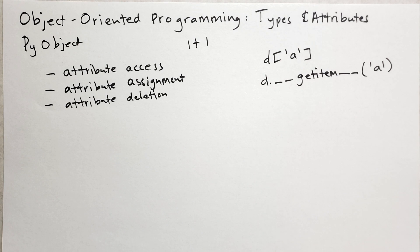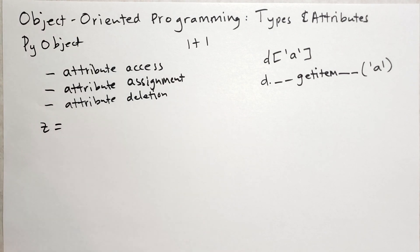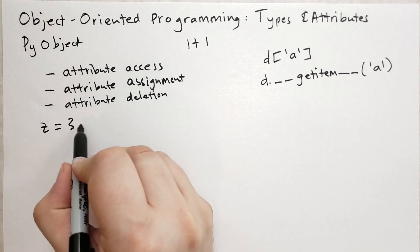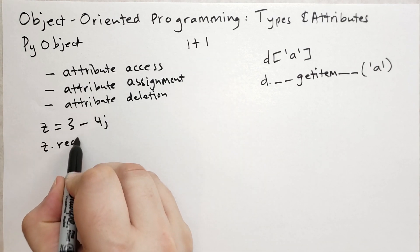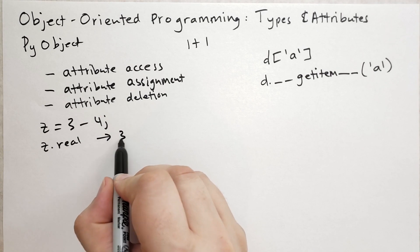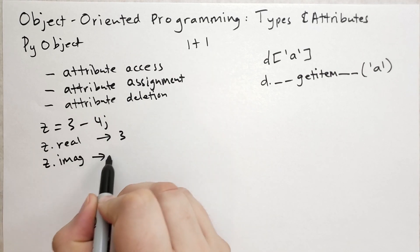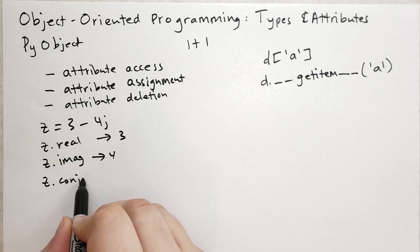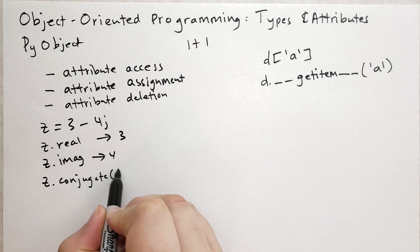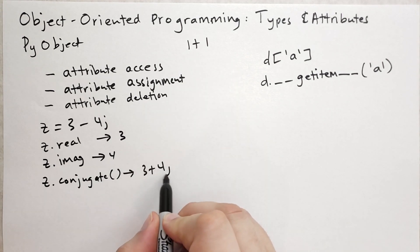So attribute access. We've already seen attribute access. It's pretty easy. You might have a complex number, 3 minus 4J. And then you might want to say, what's the real component? And that will give you 3. And then Z.imag, that will give you 4. And you can even call Z.conjugate. And that will return 3 plus 4J as a result.